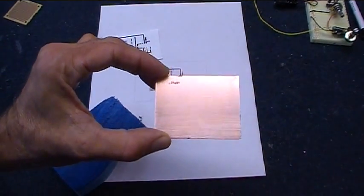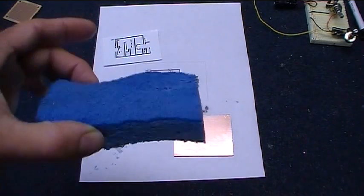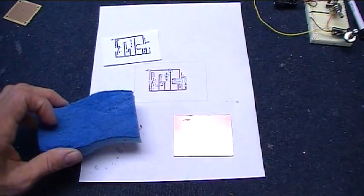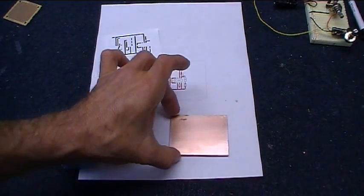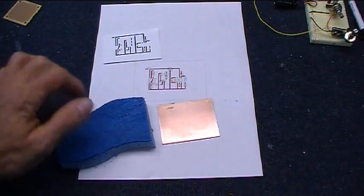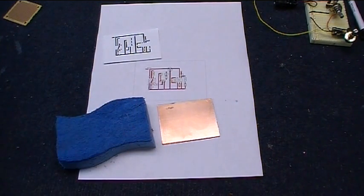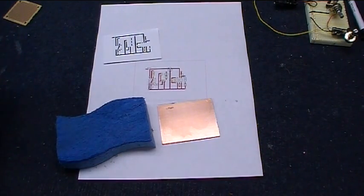So I used a sponge with a kind of a scrubby scotch bright type pad on it and some toothpaste, and it worked quite well. Did a really good job. Just the mild abrasive of the toothpaste took off the layer of oxidation. So now I'll clean this with some alcohol and some acetone and then transfer everything onto it and see how it comes out.